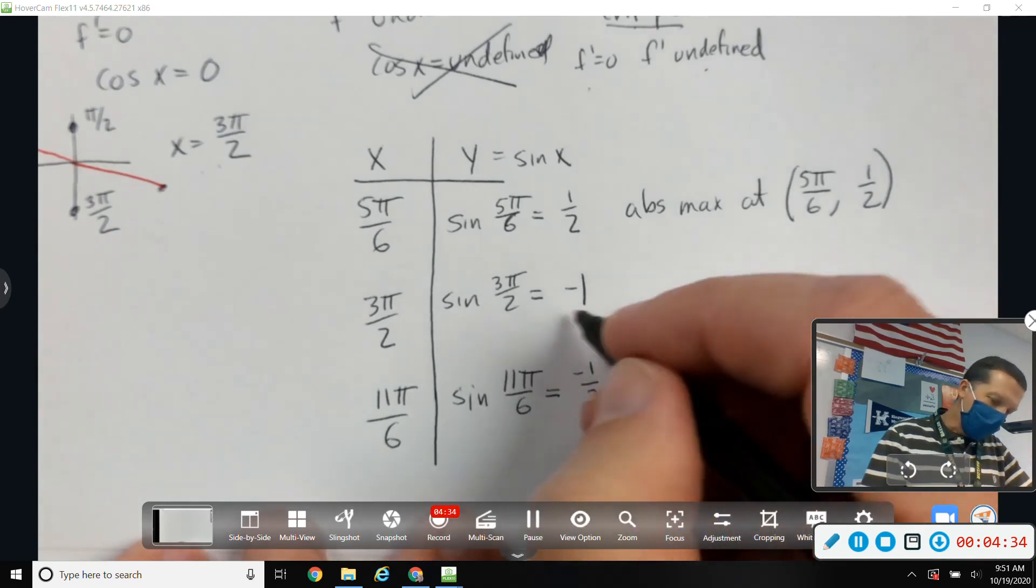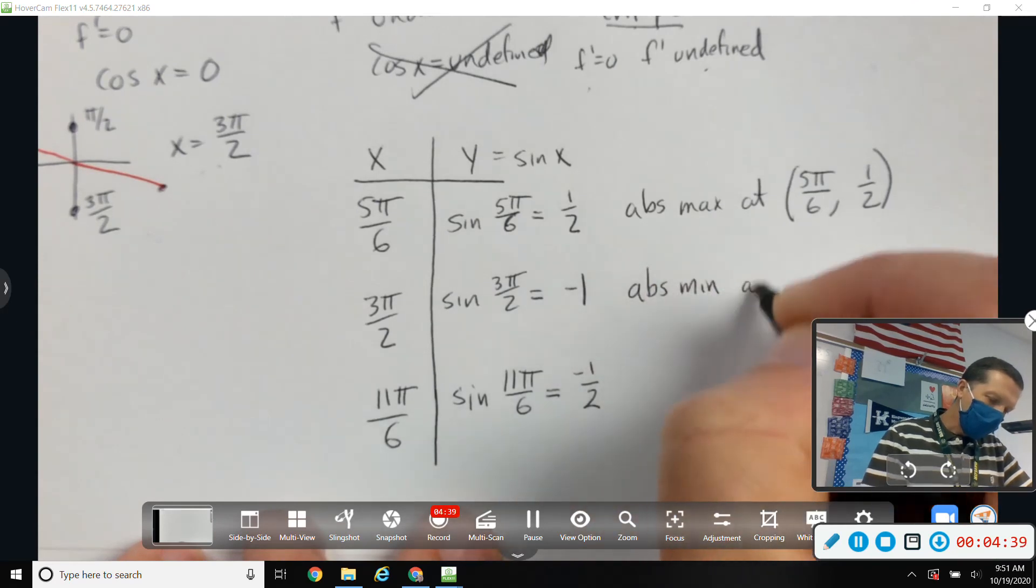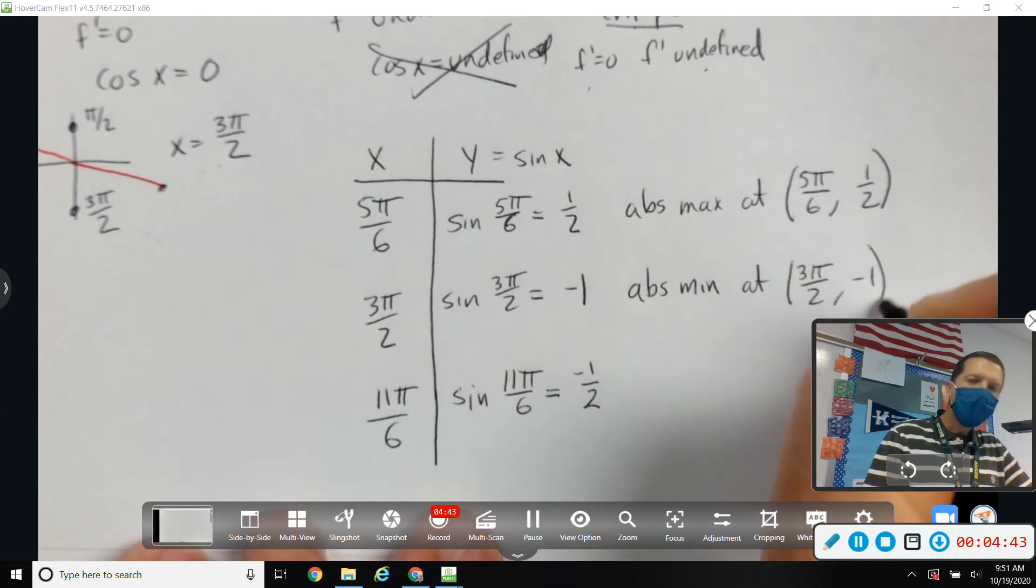And a minimum, and the smallest one is negative one. So an absolute minimum at three pi over two, comma, negative one.